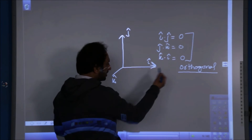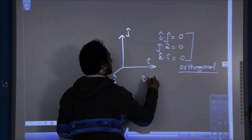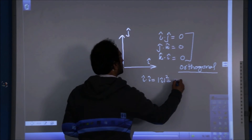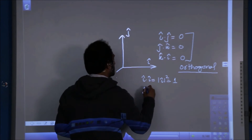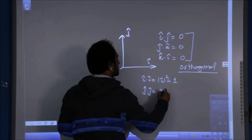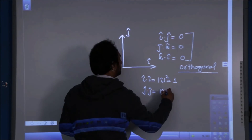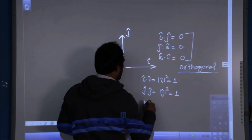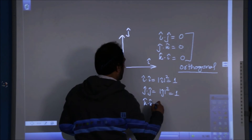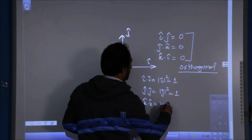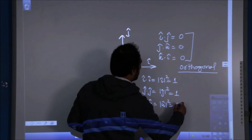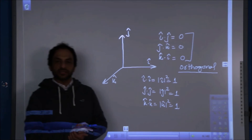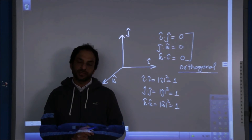Also, because I, J, K are unit vectors, I dot I = |I|² = 1. Similarly, J dot J = |J|² = 1, and K dot K = |K|² = 1. These are the important characteristics of the scalar product.